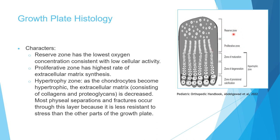The second zone is the proliferative zone. As the name tells you, cells start to proliferate — from round they become flattened and form columns of cells. These cells start to synthesize extracellular matrix like proteoglycans and collagen. The proliferative zone has the highest rate of extracellular matrix synthesis.